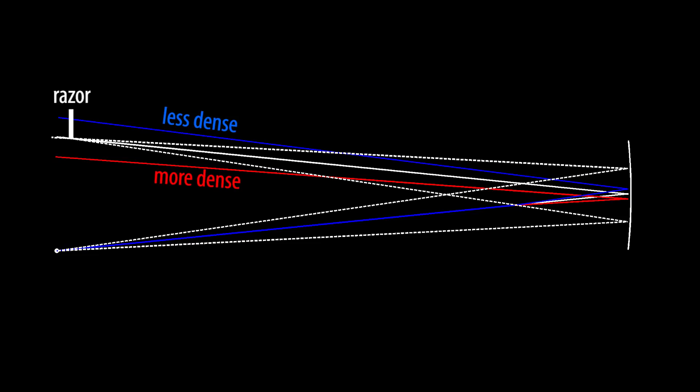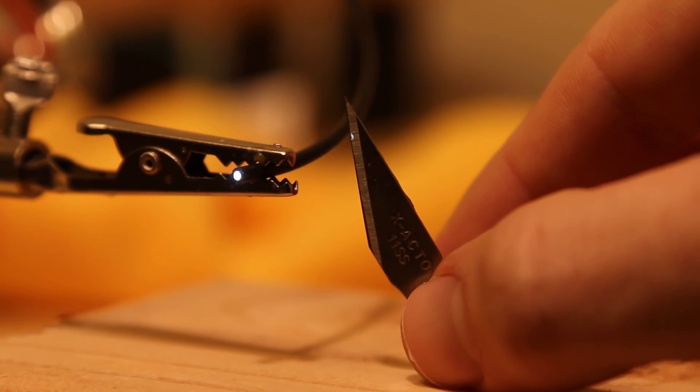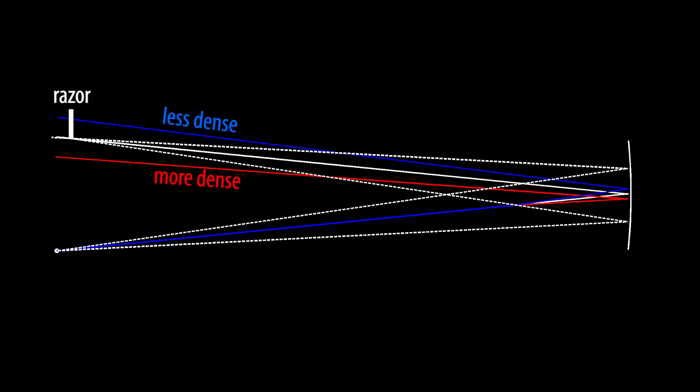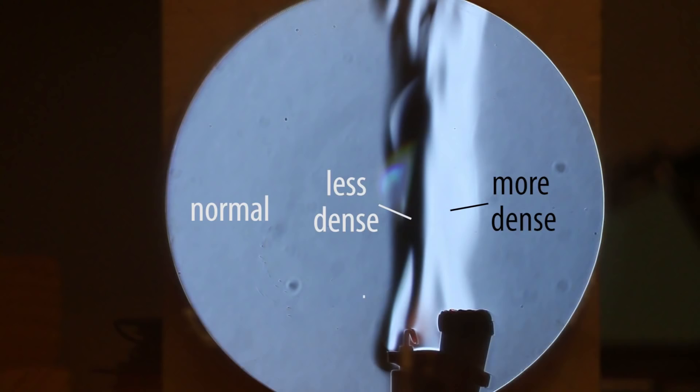Placing a razor blade at our focal point will block half the light, but otherwise leave our image unaffected. The consequence, however, is that light that refracted through the less dense air gets completely rejected, and light that refracted through the denser air gets passed. This simple effect leads to some pretty amazing results.